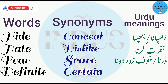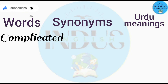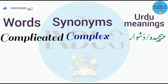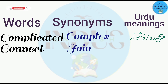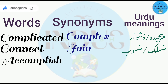Definite — synonym is certain. Urdu meaning is saaf ya wazih. Complicated — synonym is complex. Urdu meaning is pechida ya dishwar.